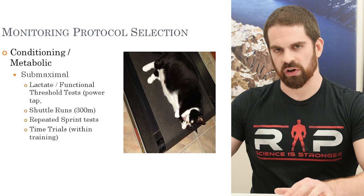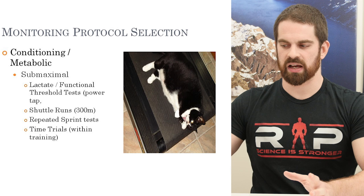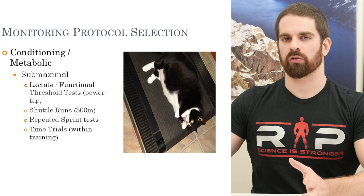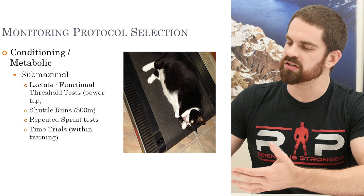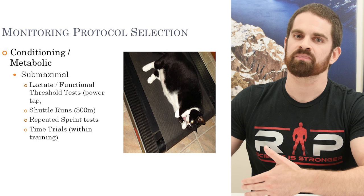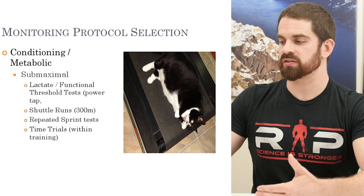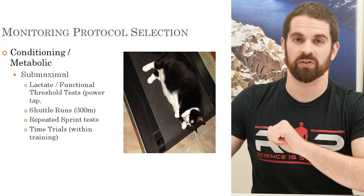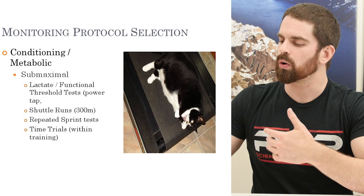For conditioning and metabolic monitoring, typically this isn't something you do a lot of. There are some functional threshold tests and repeated sprint tests, and for endurance athletes, time trials are probably the better idea. For anaerobic sports like team sports and strength-power sports, you probably don't need much conditioning and metabolic monitoring — sprinting and gameplay performance will cover it. For endurance sports, time trials are the priority. Keeping track of race pace times, mile times, and lap times is really, really useful and does not require super formal assessment.